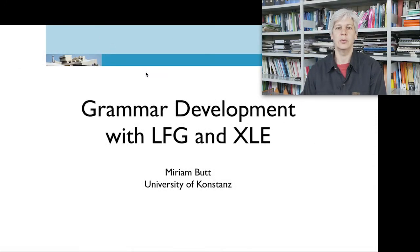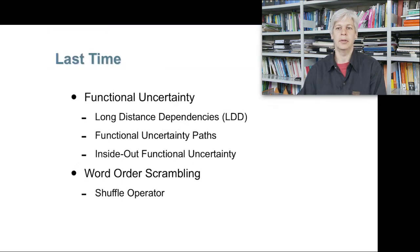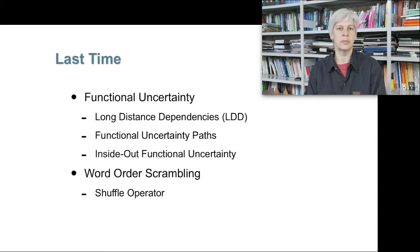Hello and welcome to the last and final session of grammar development with LFG and XLE. Last time we looked at functional uncertainty, long-distance dependencies, functional uncertainty paths, and inside-out functional uncertainty, and we looked at word order scrambling with a shuffle operator. The inside-out functional uncertainty was for NAFRA resolution — we didn't practice with that, I just showed you how to do that.